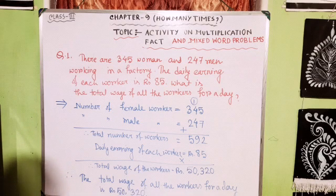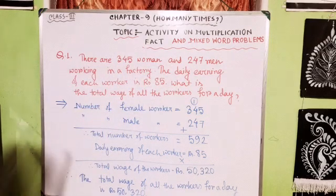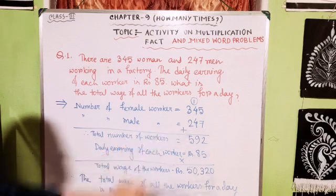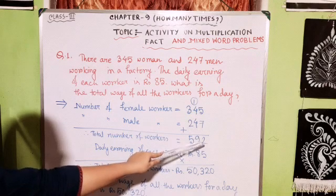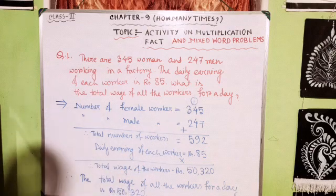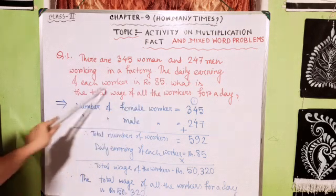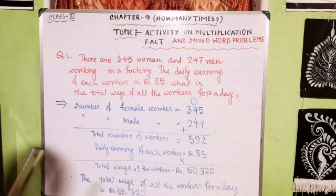Now let us look at a mixed word problem. We need to find out how many workers are there in the factory. There are 345 women workers and 247 men workers. We need to find out the total number of workers, and then we need to find out the total wage of all workers. For the wages, we have to multiply.